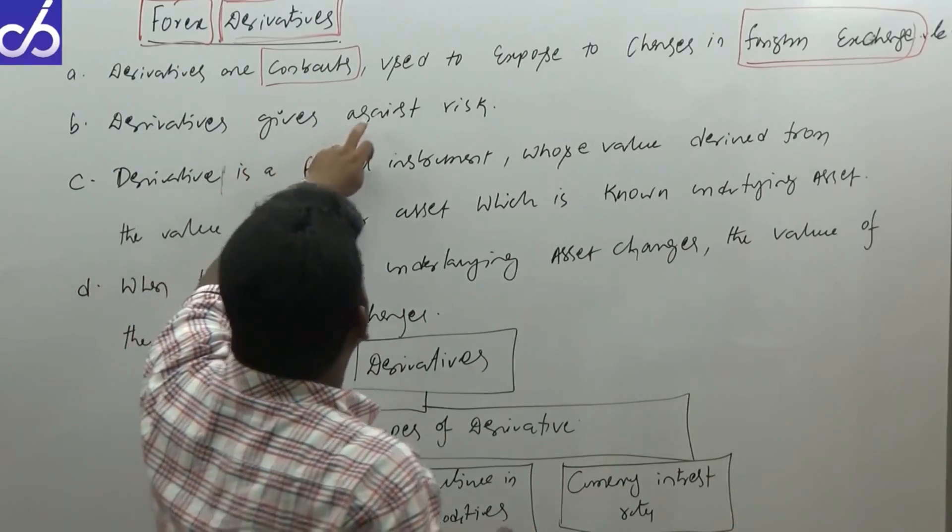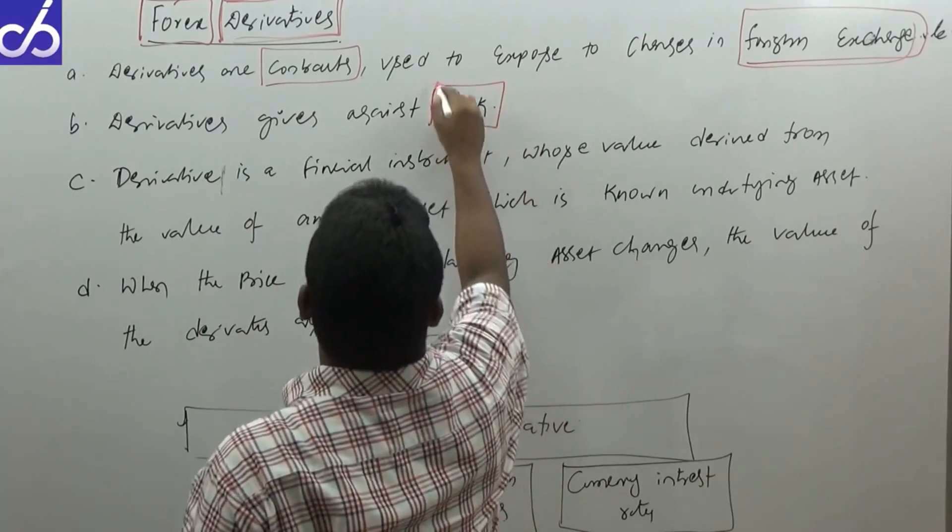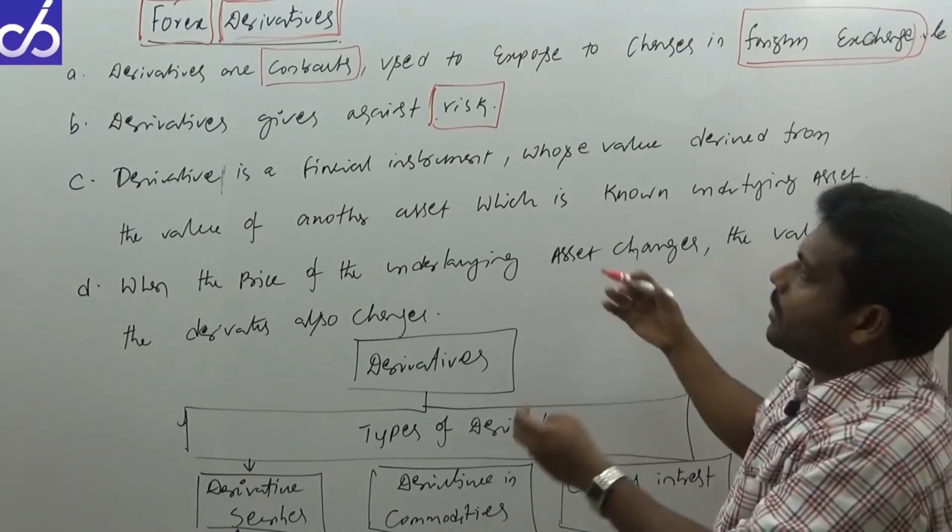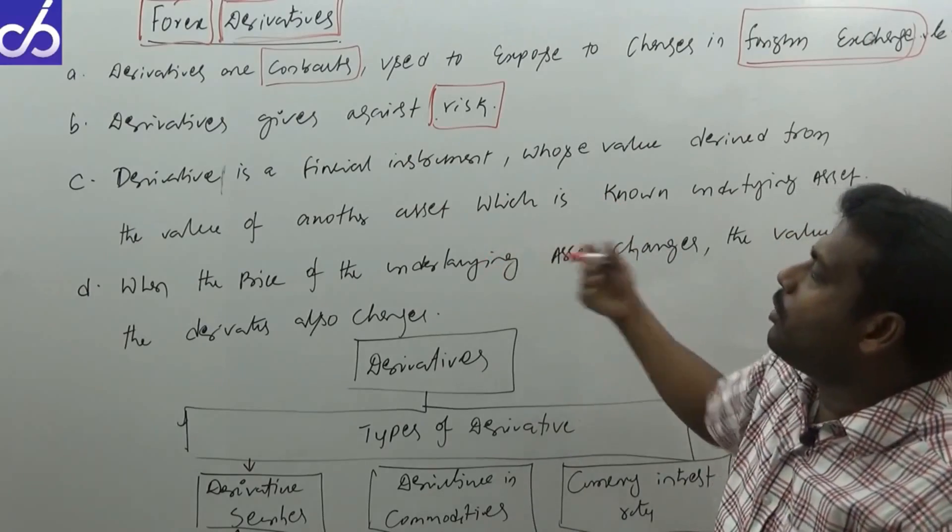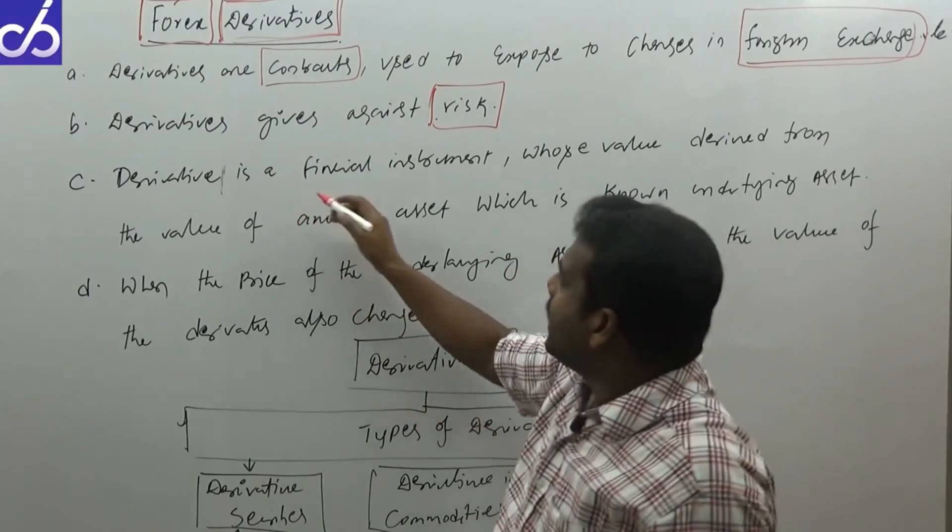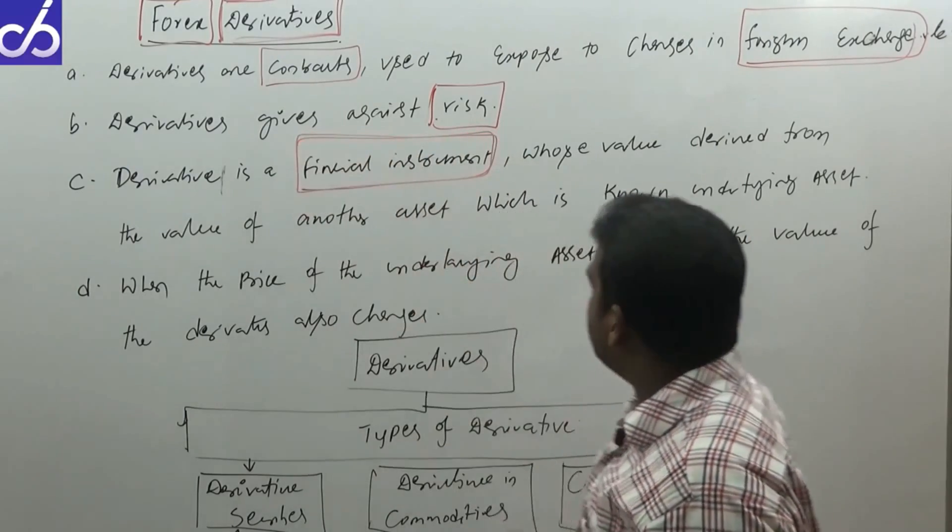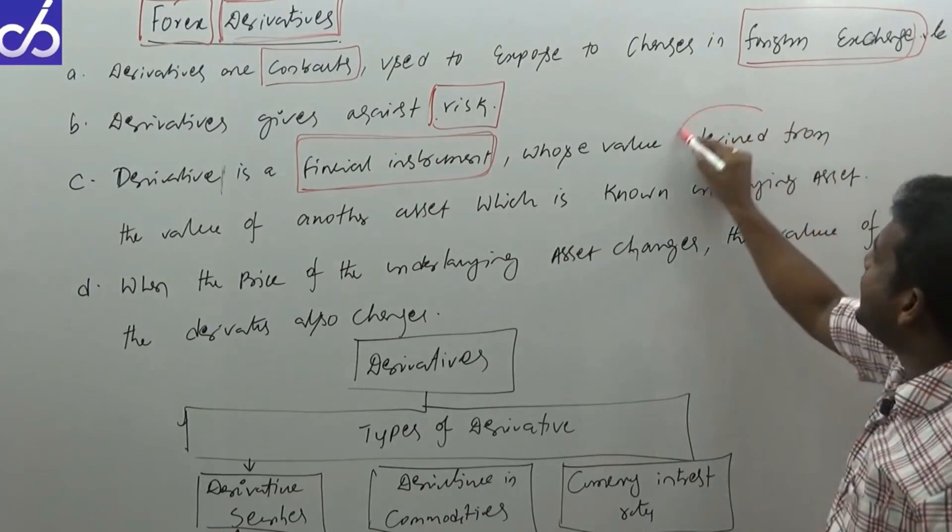What is this against risk? I will explain further. A derivative is a financial instrument whose value is derived.